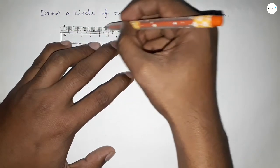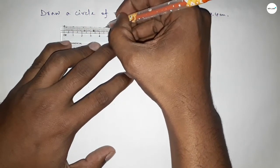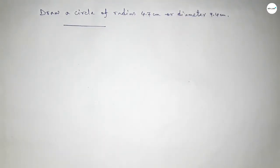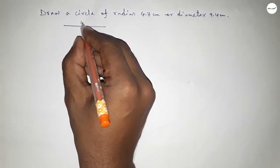This is 0, 1, 2, 3, 4, 4.5, 6, 7. So this is 4.7 centimeter. So first drawing a length 4.7 centimeter here.